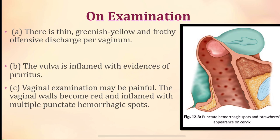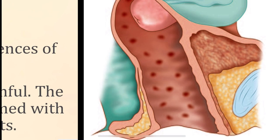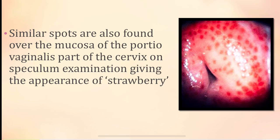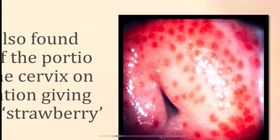The patient will have a strawberry appearance on the cervix — because the entire wall is red and inflamed, containing many hemorrhagic spots which give the appearance of a strawberry. Similar spots are also found on the mucosa of the portio vaginalis of the cervix, and even the posterior vaginal wall shows these hemorrhagic spots on speculum examination.